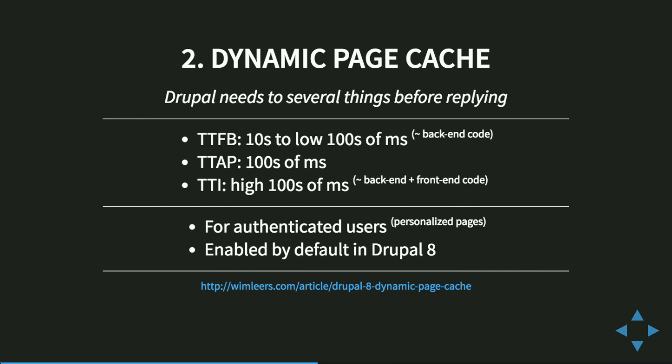Then there's the dynamic page cache, and that's new — especially important if you have authenticated users, and it transparently works in the background. The way we've safely integrated the dynamic page cache, the time to first byte is more within the tens to low hundreds of milliseconds range. There are initiatives to improve that in the future. The time to asset prefetch is also within hundreds of milliseconds, and the time to interact is fairly high. So that's for authenticated users.